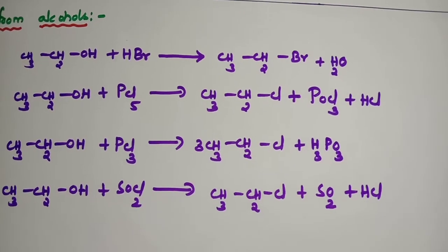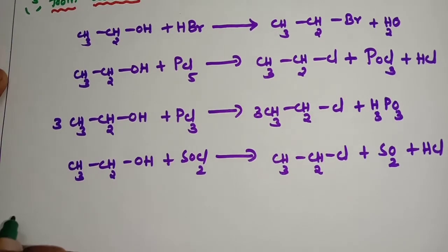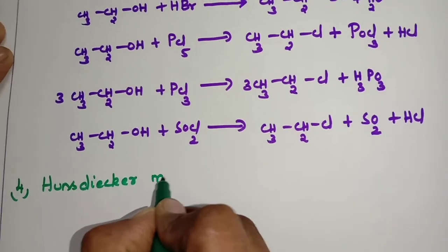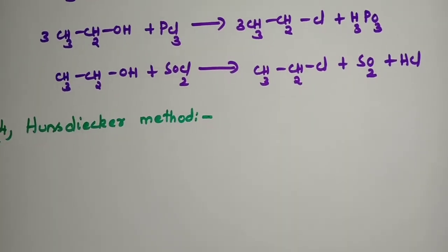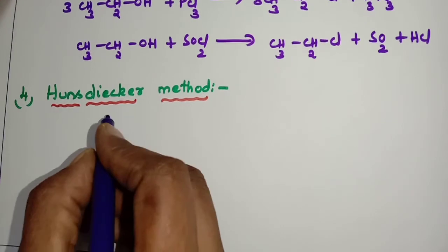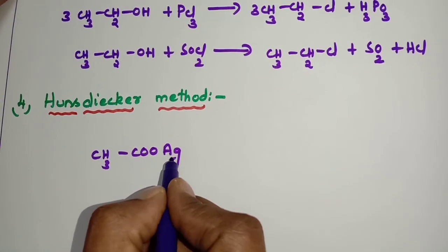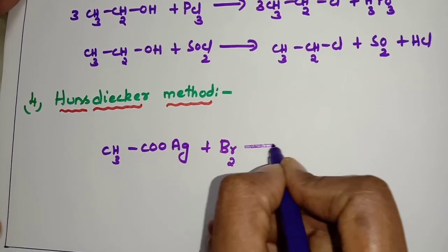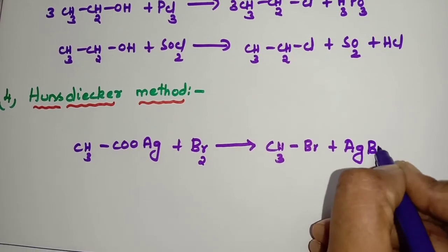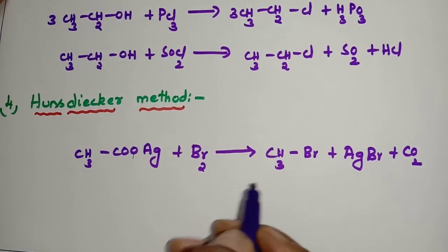So this is the third method of preparation. The fourth one is the Hunsdiecker method. In the Hunsdiecker method, silver acetate — CH3COOAg — plus Br2 gives CH3Br plus silver bromide AgBr plus CO2. So CO2 comes out as carbon dioxide, and we obtain methyl bromide as the alkyl halide product.